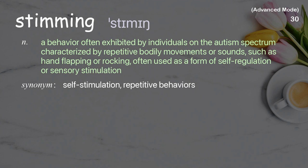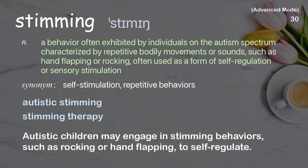Stimming: A behavior often exhibited by individuals on the autism spectrum, characterized by repetitive bodily movements or sounds, such as hand flapping or rocking, often used as a form of self-regulation or sensory stimulation. Examples: autistic stimming, stimming therapy. Autistic children may engage in stimming behaviors, such as rocking or hand flapping, to self-regulate.